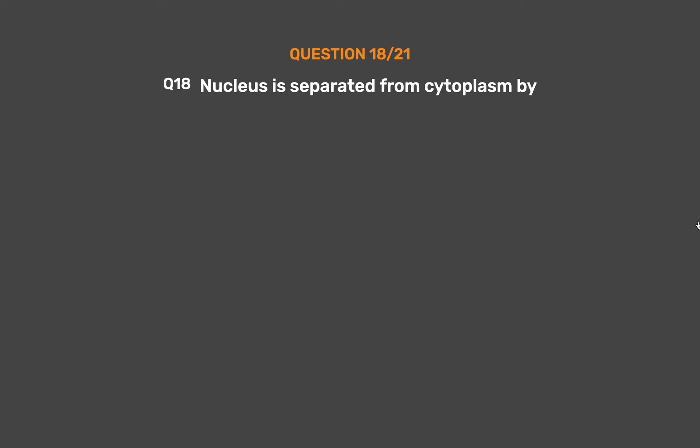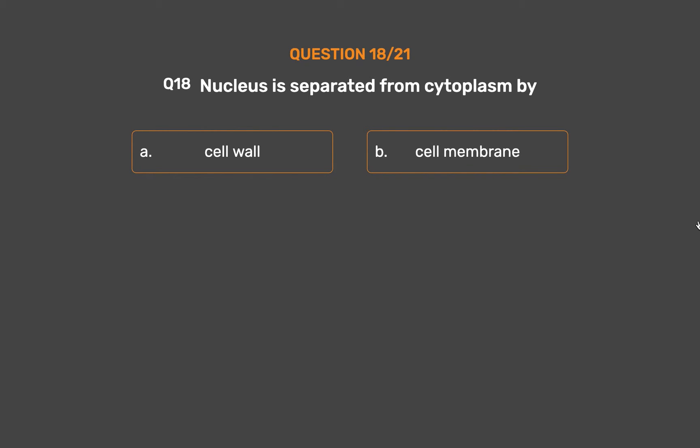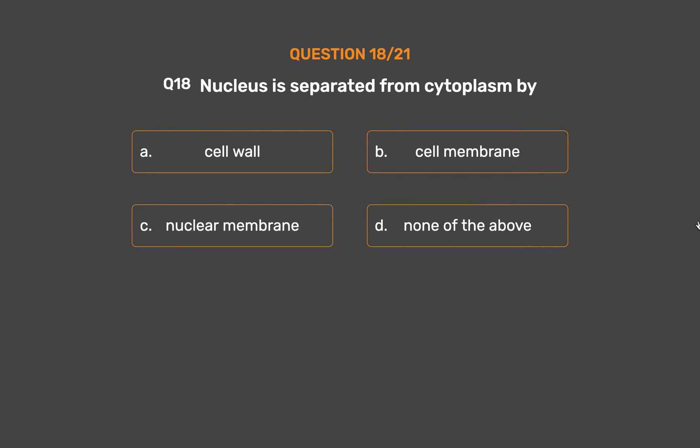Question No. 18: Nucleus is separated from cytoplasm by. Option A: Cell wall. Option B: Cell membrane. Option C: Nuclear membrane. Option D: None of the above.